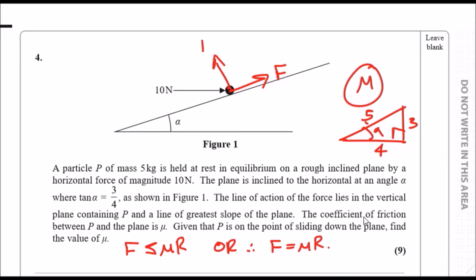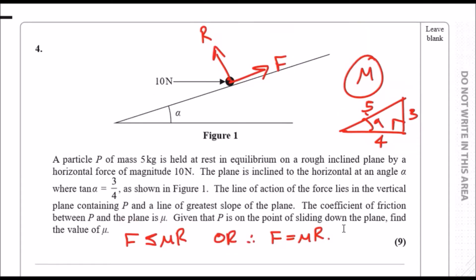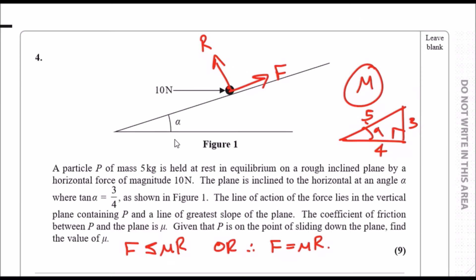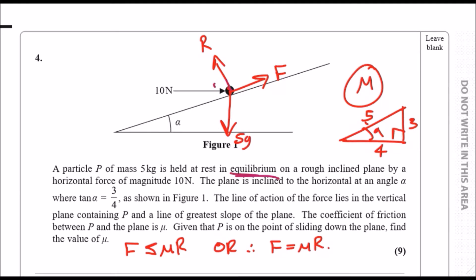The reaction is always perpendicular to the plane itself. We need to add the particle P of mass 5 kg, so this is going vertically downwards at 5g. Now we need to label our angles—this will make resolving so much easier. I always follow the direction of the reaction itself, so if I extend this line, the weight is at an angle of α.